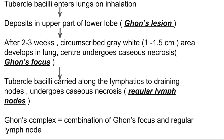On deposition, it creates a lesion which is called Ghon's lesion. After two to three weeks, that lesion develops into a grayish-white colored area which is 1 to 1.5 centimeters, circumscribed, and can undergo caseating necrosis. This area is called Ghon's focus.